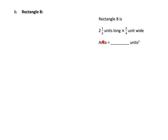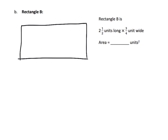For the next problem we have to draw our scaffold. The length is two and a half, the width is three-quarters. I tell students not to worry about drawing it proportionally — just draw it so this represents your two and a half and this represents your three-fourths. Then split two and a half into two and a half.